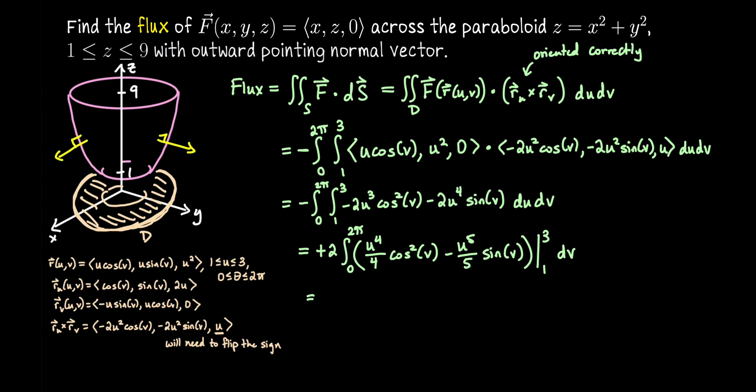Okay, continuing on, we have that leading coefficient of 2. We're going to integrate from 0 to 2π. Plug in 3⁴/4. So that's like 3² squared. That's 81/4. Minus 1⁴/4. So minus 1/4. Cosine² v. Minus 3⁵/5. Minus 1⁵/5. Sine v. And then integrate that with respect to v.